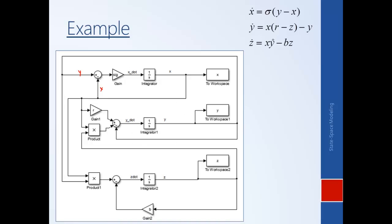Y-dot is X times (R minus Z) minus Y, which is XR minus XZ minus Y. X is branched off here, so this is X times R, this is X times Z, and Y is fed back. So XR minus XZ minus Y gives Y-dot — integrate it once to get Y.